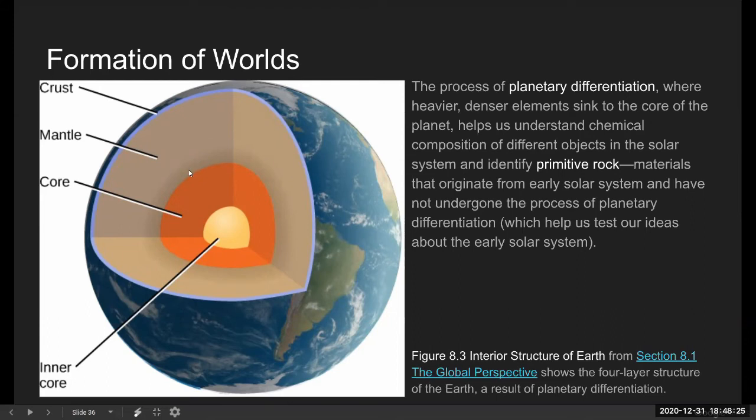In the earlier stage of solar system, we think Earth was molten. From various sources of heat, Earth was much hotter. And when Earth was hotter and everything was molten, the heavier, denser elements sink to the core of the planet. So we have an iron-nickel core in the center, it's denser.